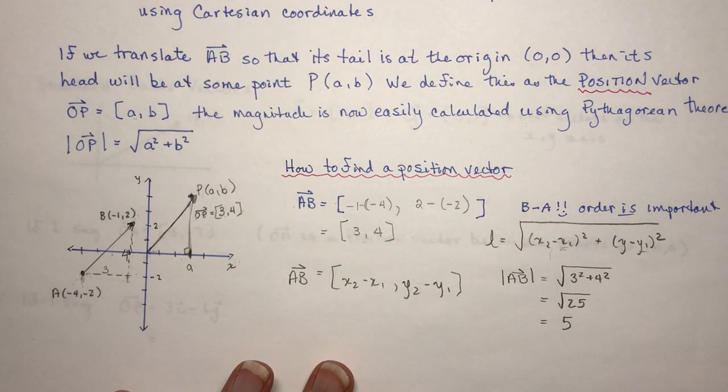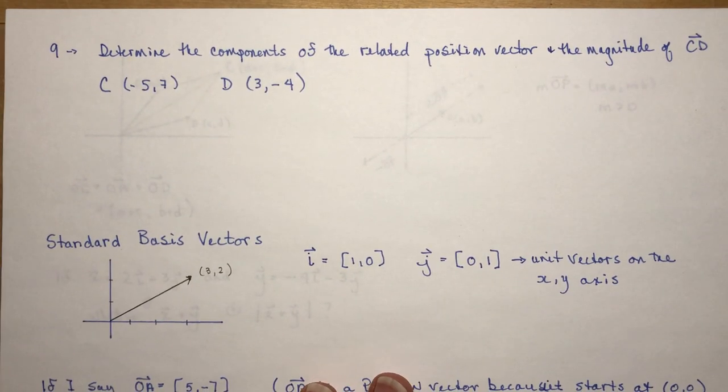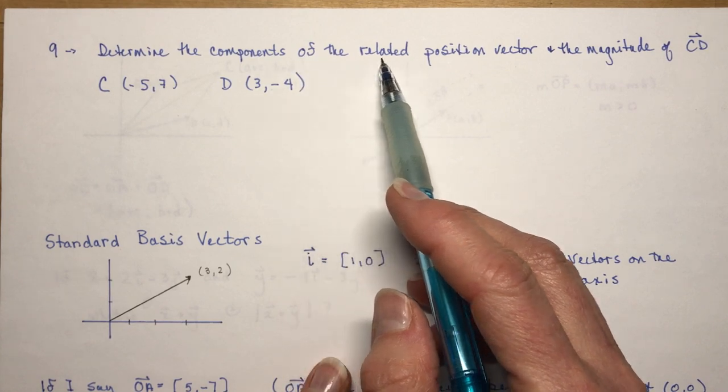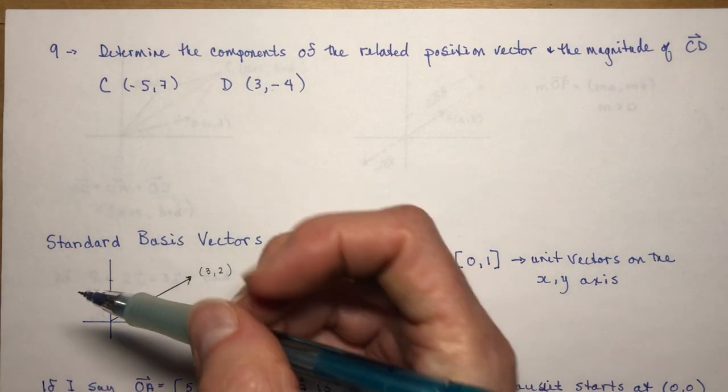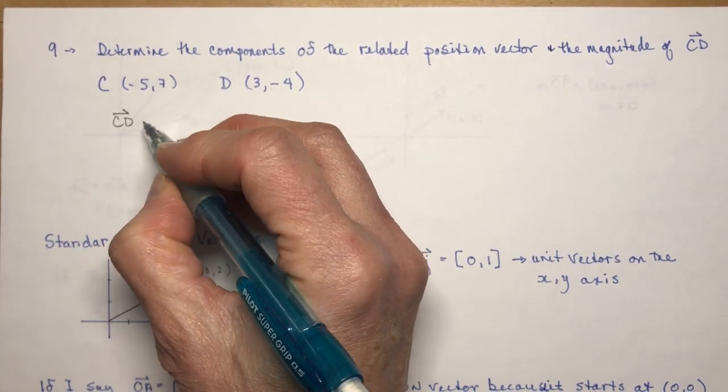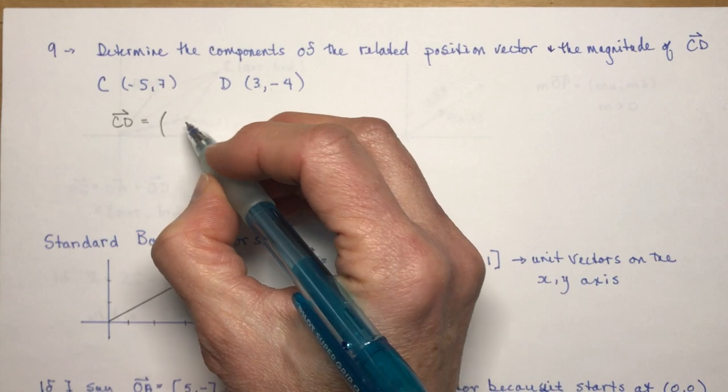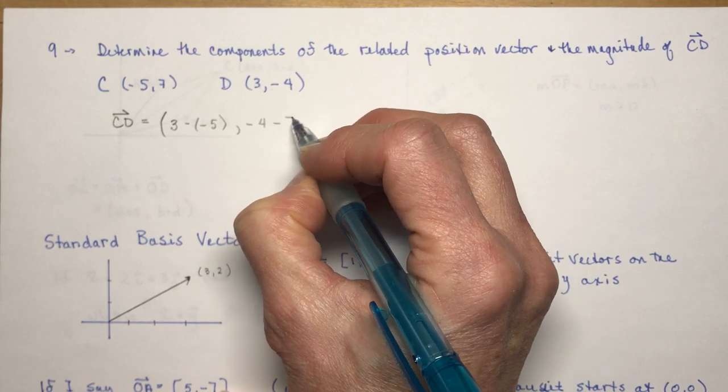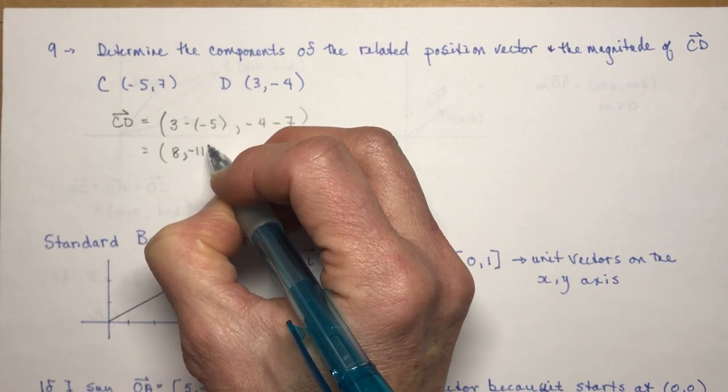And we get the square root of 25, which of course is 5. So that's the magnitude of AB. So that's not too difficult, right? So you have some homework questions. Number 9, I'm not sure this one is actually from it, but it's a like question. It says, determine the components of the related position vector. In other words, find the position vector and find its magnitude. So this is just what I just did for you, but a little extra practice. So I'm doing CD. Vector CD is going to be, I'm going to do 3. So I do D minus C. So don't forget your negatives. We've got a 3 minus a minus 5. And we have a minus 4 minus 7. So I get vector CD is 8 and negative 11.